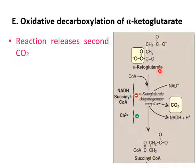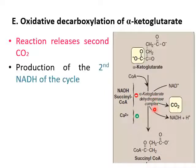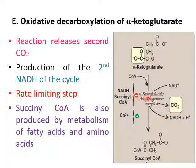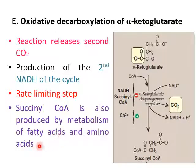Alpha-ketoglutarate is again oxidatively decarboxylated into succinyl-CoA. The enzyme used is alpha-ketoglutarate dehydrogenase complex. At this step, the second NADH molecule is produced and the second carbon dioxide is released. Regulation: high concentrations of NADH and succinyl-CoA inhibit alpha-ketoglutarate dehydrogenase complex, while high calcium concentration stimulates it. Succinyl-CoA is also synthesized from the metabolism of fatty acids and amino acids.